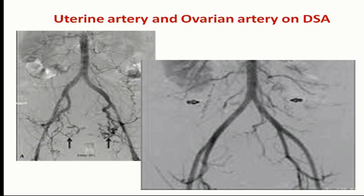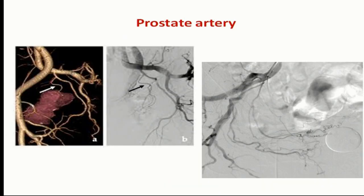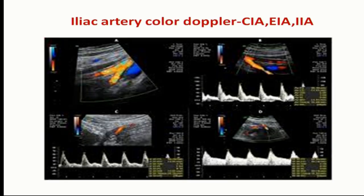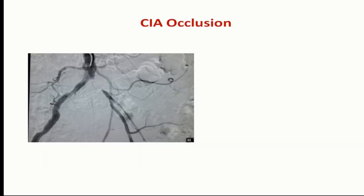The second artery seen in the images is the ovarian artery — bilateral, tortuous, and often cannot be seen on Doppler. The second important artery is the prostate artery. A new intervention concept is prostate artery embolization for BPH — patients no longer need surgery. Just as we do uterine artery embolization for fibroids, AVM, and aneurysm, we can do prostate artery embolization for prostatic hyperplasia. New guidelines and treatment are emerging, already being done in many centers in India. This is a very small branch from the anterior division of the internal iliac artery.